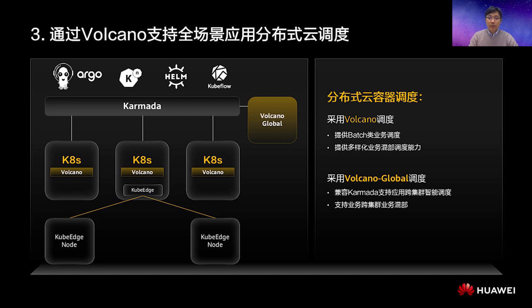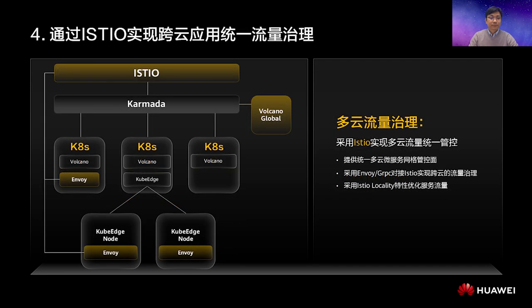When applications become more distributed, traffic management becomes more challenging. In this case, you can integrate Istio to improve traffic governance for multi-cloud and multi-cluster applications. Istio can well support multi-cluster and distributed cloud deployments. You can use a unified Istio control plane to manage your service mesh, with a data plane as lightweight as Envoy Sidecar or gRPC Sidecar. We also advise using Istio Locality to better manage traffic.